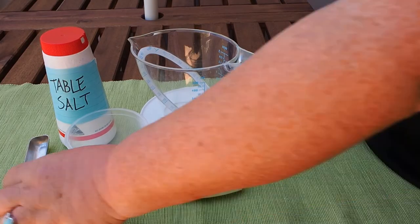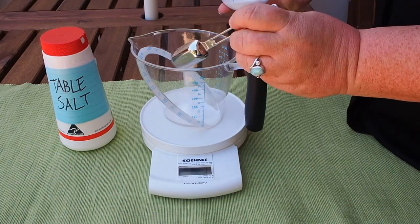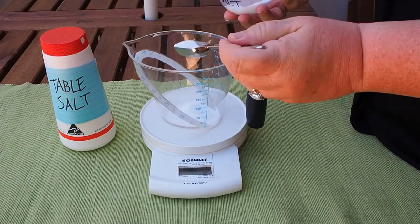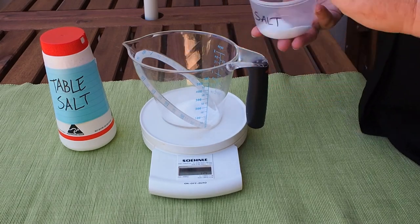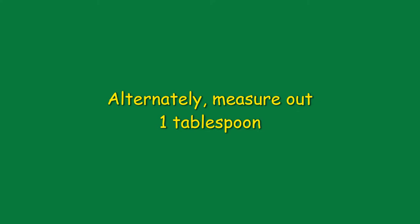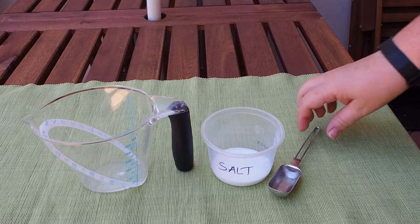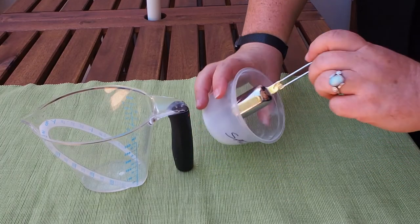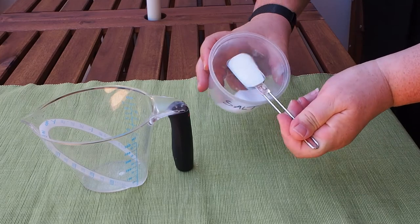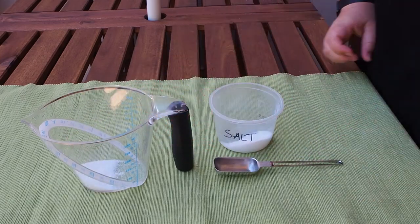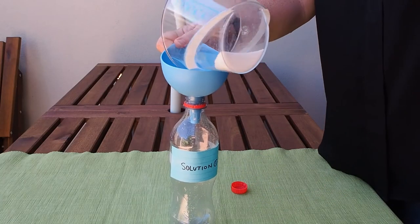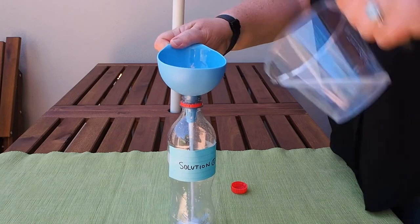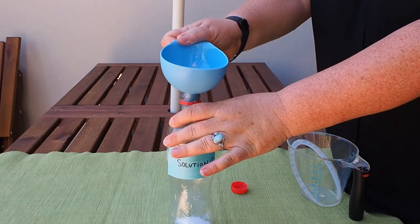If you're weighing the salt, put your measuring jug on the scales and tare it to zero. Carefully weigh out 10 grams of salt. If you don't have kitchen scales, one tablespoon is approximately 10 grams of salt — fill the tablespoon and shake or tap it off to level it. Pour the salt into the bottle labelled solution one, tapping to make sure all of the salt is transferred.